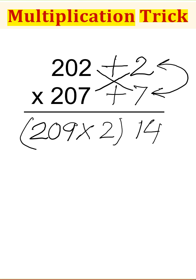209 times 2 is 418, 14, so 41,814 is our answer.